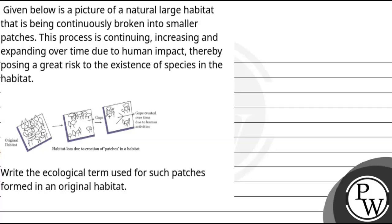Let's read the question. In this question, we have been given a picture of a natural large habitat. We can see here a picture of an original habitat, which is continuously breaking into smaller patches. Gaps are created over time due to human activities, and this process is continuing and increasing due to human impact. We need to know which ecological term we use for such patches formed in an original habitat.